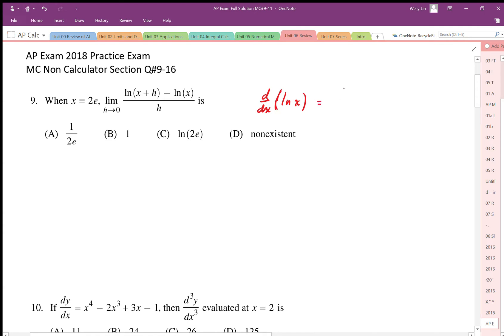And that derivative is 1 over x, and then we would evaluate that derivative at x equals 2e. So y prime at 2e would be equal to 1 over 2e, so the answer is a. So that's one way this could be done.